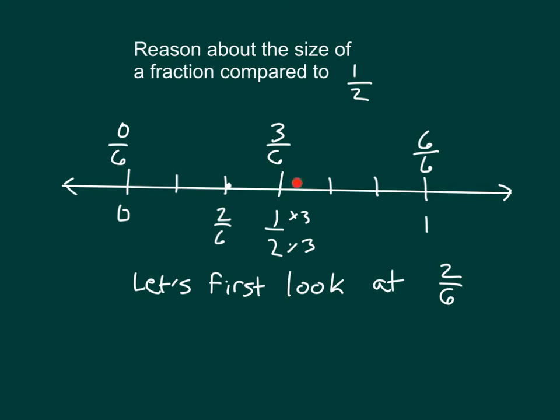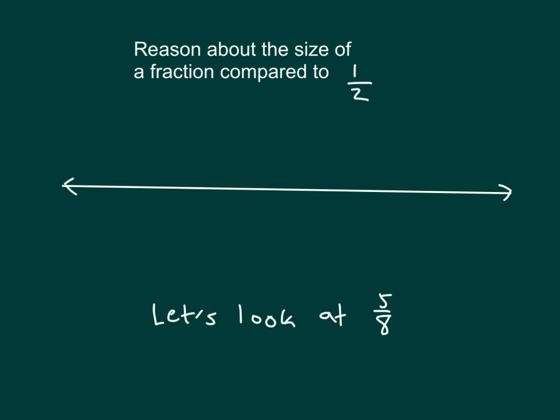There are 6 parts in between 0 and 1: 1, 2, 3, 4, 5, and 6. Let's look at 5/8. Again, it's 0 and 1, halfway in between is a half.